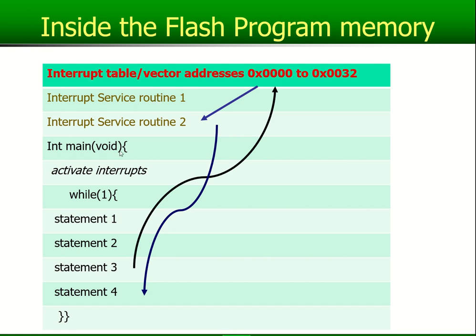In the main program, at the start you will activate your interrupts. Every program will always have a while(1) loop with some statements. Let's take an ADC example — as soon as the ADC is finished you activate it and tell it to run. Maybe the first statement says: start the conversion of the ADC. Then at some point, if that conversion is finished, let's assume we're sitting at statement number three — you will jump out.